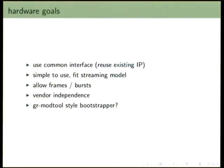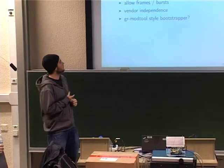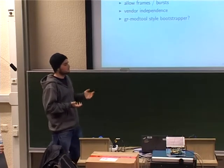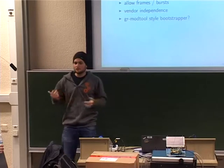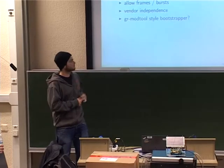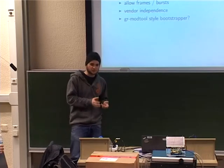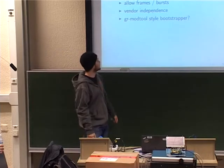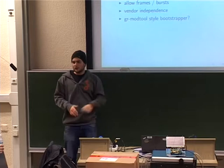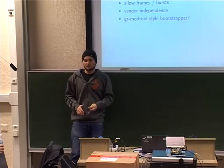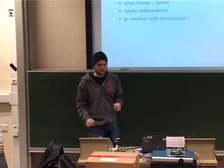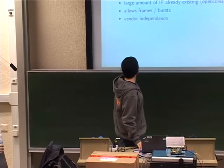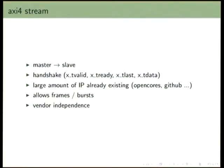Looking at hardware goals I had in mind when doing this project: you want to use an interface people know, something that's easy to use and widespread. You want an interface that fits the streaming model I explained before, and it should be vendor-independent. Even though this was targeted to Zynq, you also want to use the Altera SoC or whatever at one point in the future. With the whole FPGA stuff comes a lot of boilerplate — ugly Tcl scripts, Xilinx graphical interfaces — horrible. So I went with AXI-Stream, because that's what we use at Ettus Research, and it's also what Xilinx uses for a lot of IP.